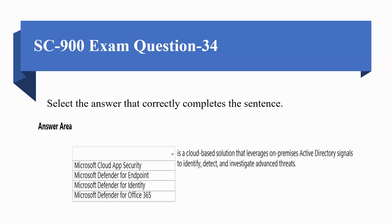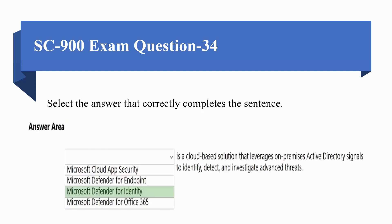Next question: select the answer that correctly completes the sentence. Options include Microsoft Cloud App Security, Microsoft Defender for Endpoint, Microsoft Defender for Identity, and Microsoft Defender for Office 365. Which of these is a cloud-based solution that leverages on-premises Active Directory signals to identify, detect, and investigate advanced threats? The correct option is Microsoft Defender for Identity.